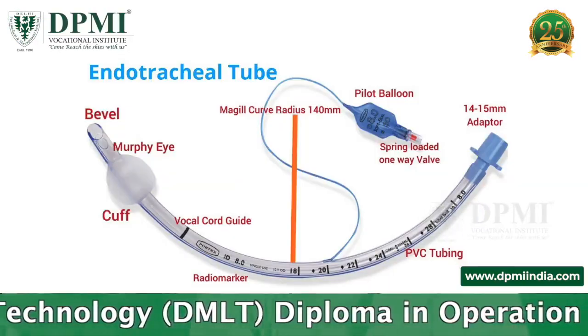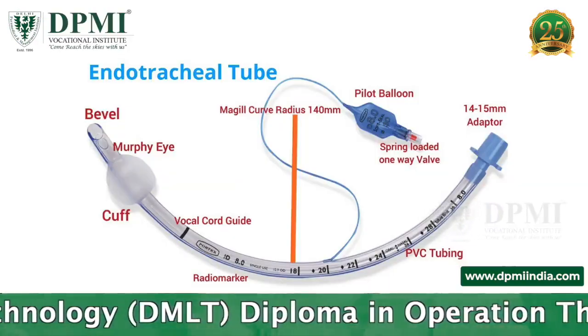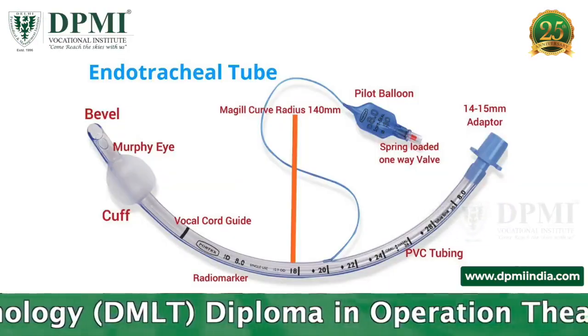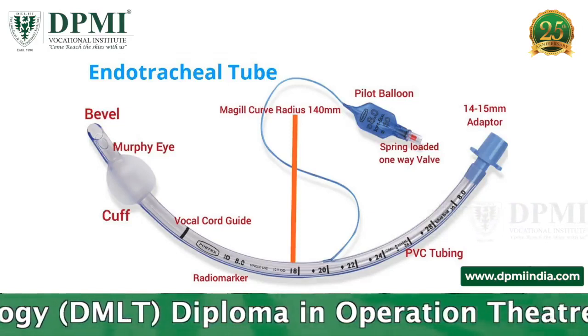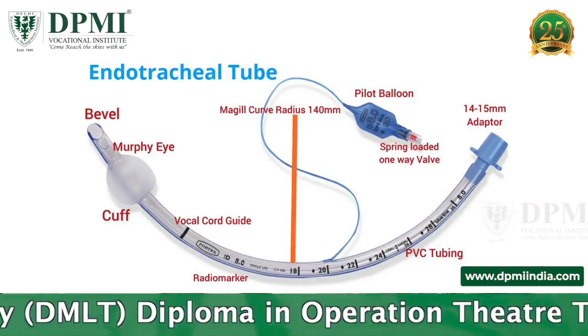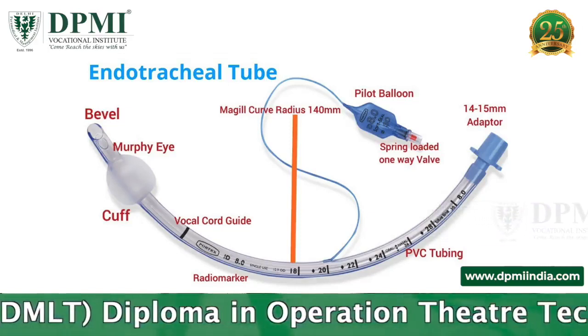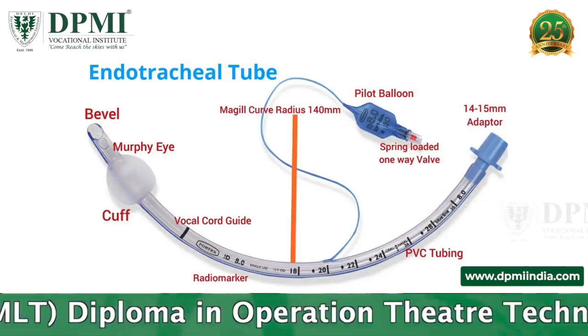The endotracheal tube is a flexible tube that is made of polyvinyl chloride, rubber, or silicone.